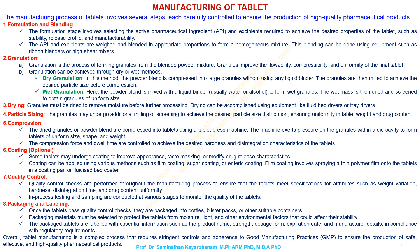Packaging and labeling. Once the tablets pass quality control checks, they are packaged into bottles, blister packs, or other suitable containers. Packaging materials must be selected to protect the tablets from moisture, light, and other environmental factors that could affect their stability.